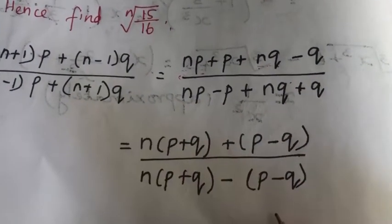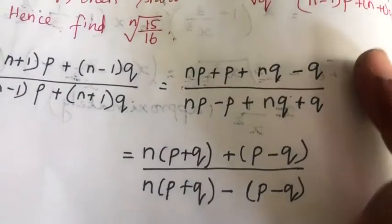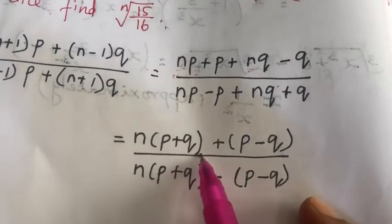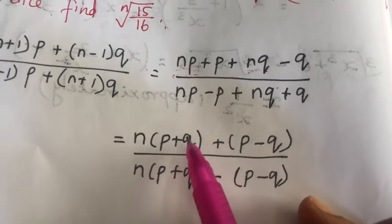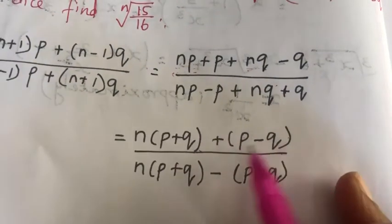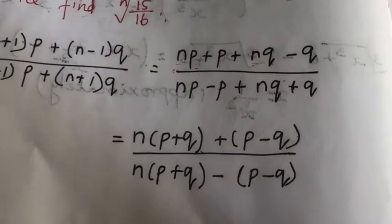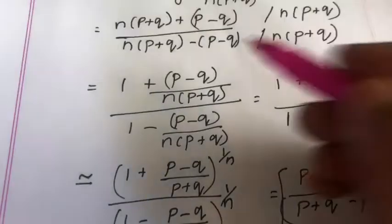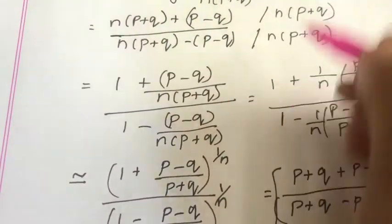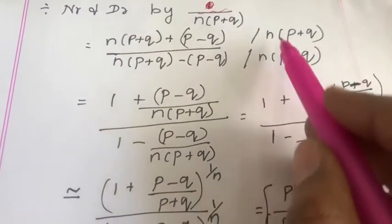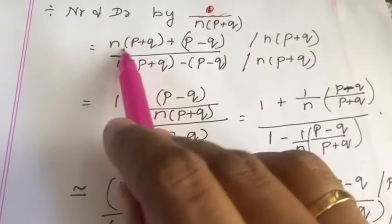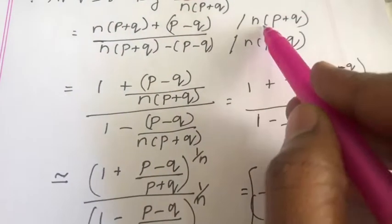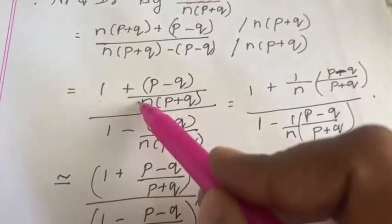Now we can divide the numerator and denominator by n(p+q). So n(p+q) cancels, giving [1 + (p−q)/(n(p+q))] in the numerator and [1 − (p−q)/(n(p+q))] in the denominator. That is equal to [1 + (1/n)·(p−q)/(p+q)] divided by [1 − (1/n)·(p−q)/(p+q)].